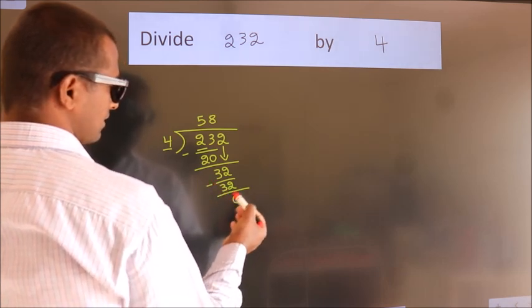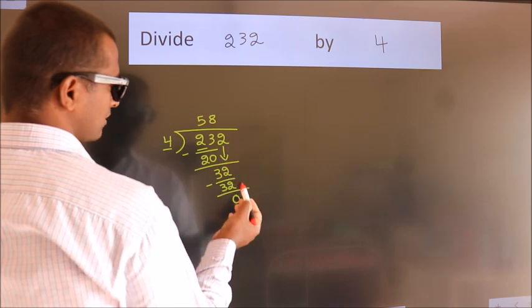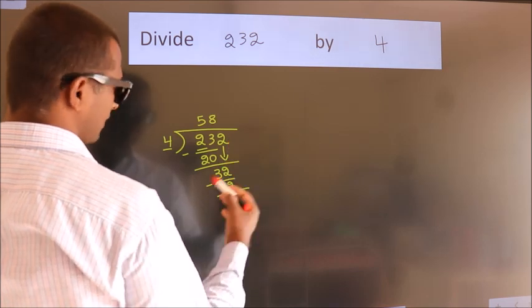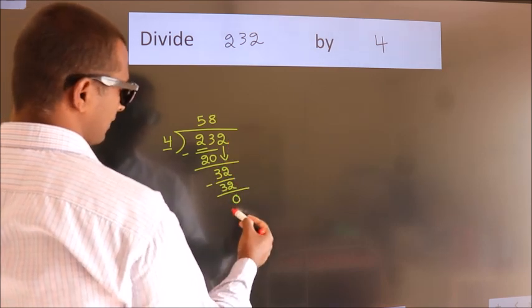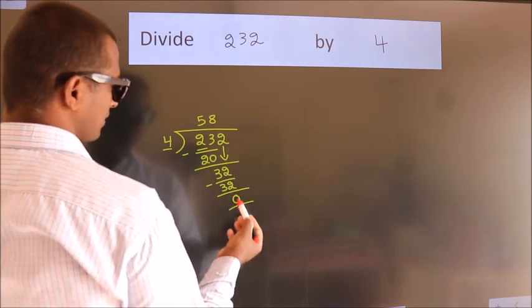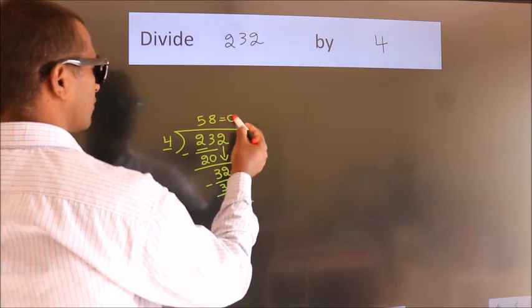After this, there are no more numbers to bring down. We got remainder 0. So, this is our quotient.